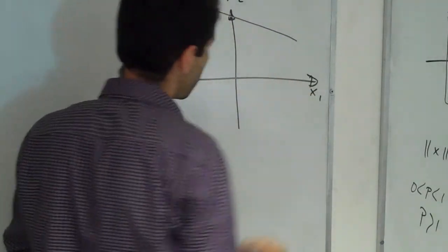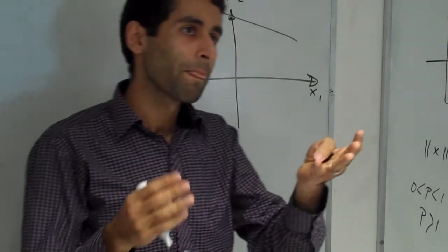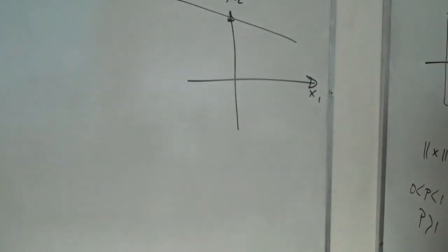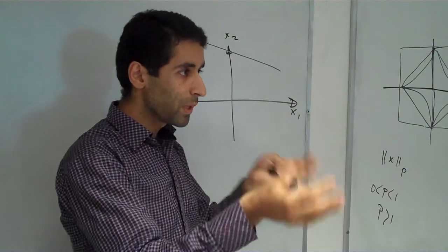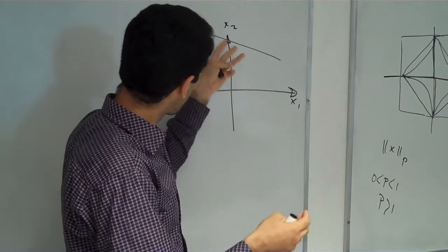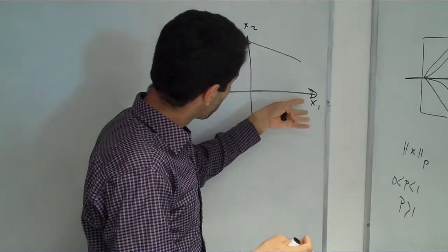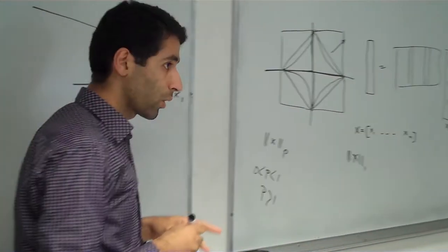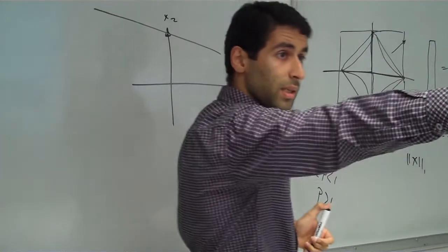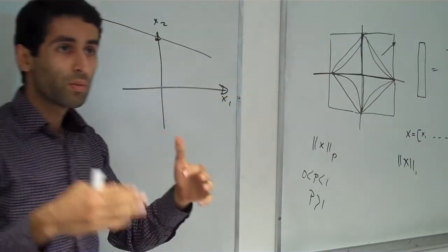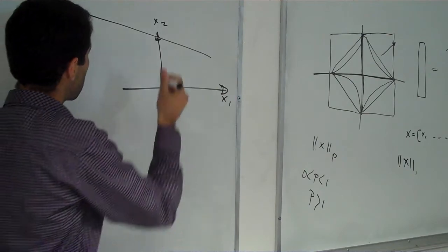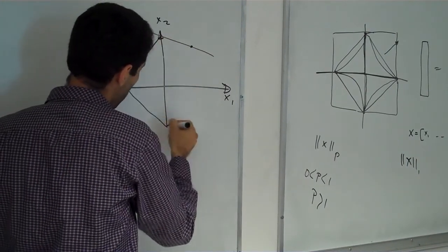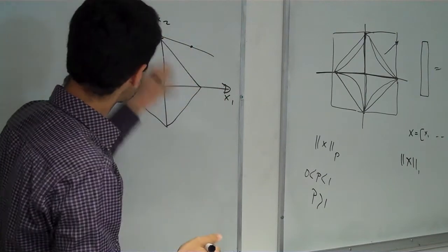And the data, for example, is here, and I want to find x that is sparse because I try to minimize the L1 norm of this. This means, in the left shape, we want to find the point that is on this line and on the L1 norm of x1 and x2.